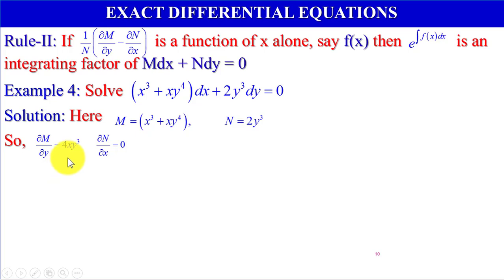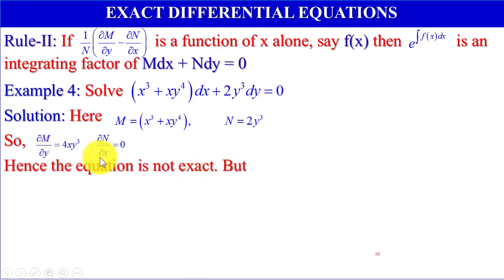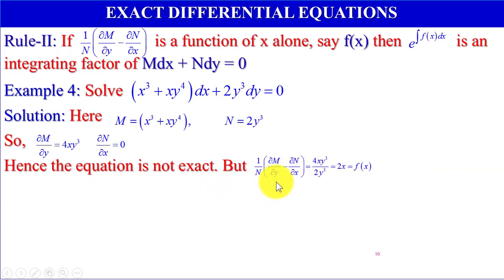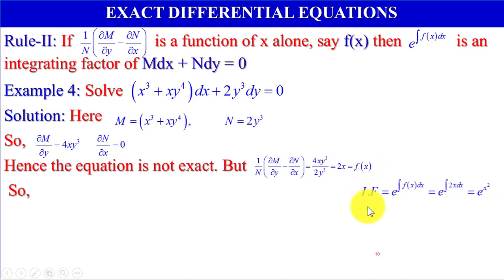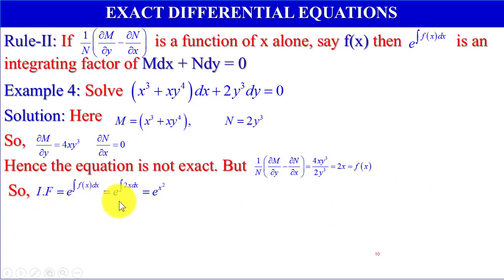So del M by del y equals 4xy cubed and del N by del x equals 0. Since these are not equal, the equation is not exact. But (1/N)(del M by del y minus del N by del x) equals 4xy cubed divided by 2y cubed equals 2x, which is a function of x alone, say f(x). So the integrating factor is e to the power integration of f(x) dx equals e to the power x squared.